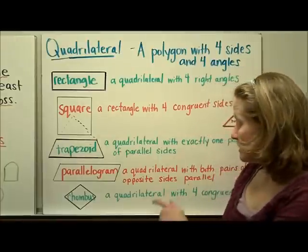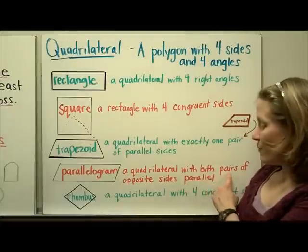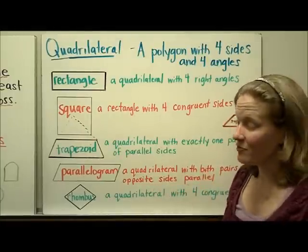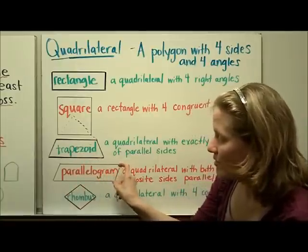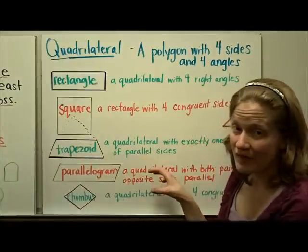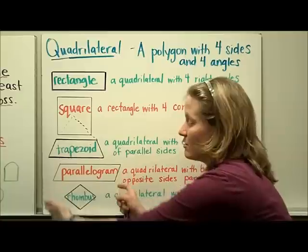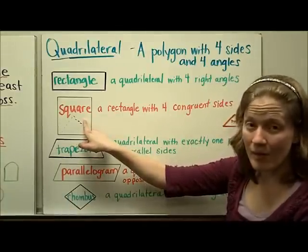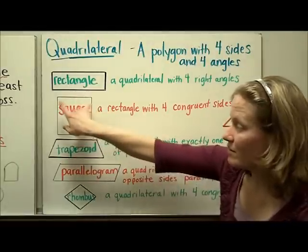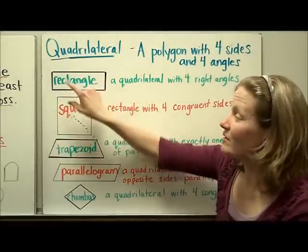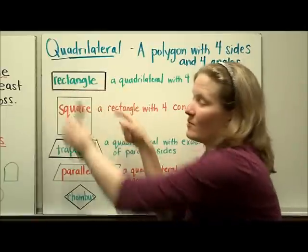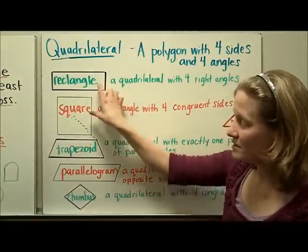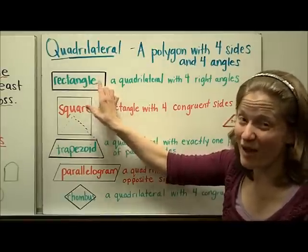A parallelogram is a quadrilateral with both pairs of opposite sides parallel — it has two pairs of parallel sides. Interestingly, a square is also a parallelogram because both pairs of its sides are parallel. A rectangle is a parallelogram too. So lots of shapes meet the same qualifications. The square and rectangle are special parallelograms because of their right angles.